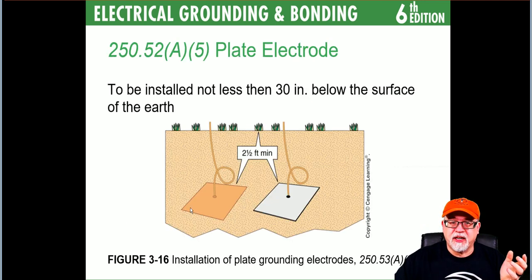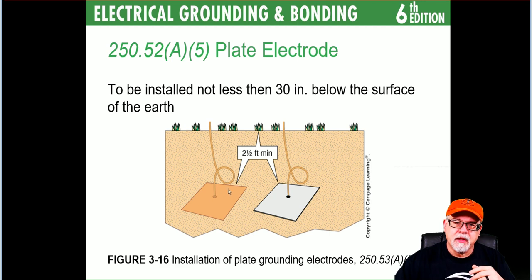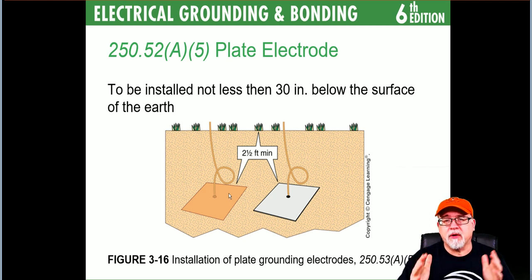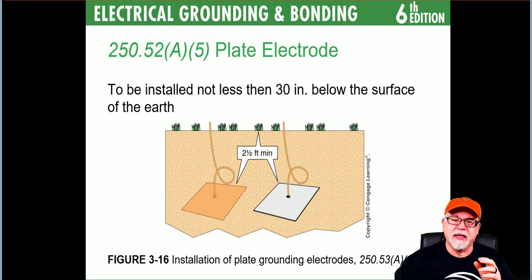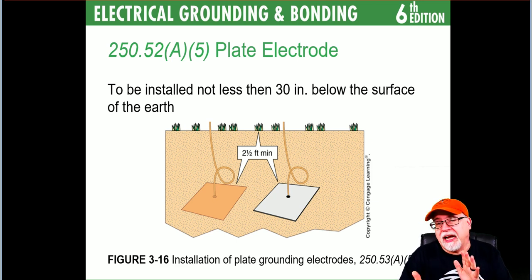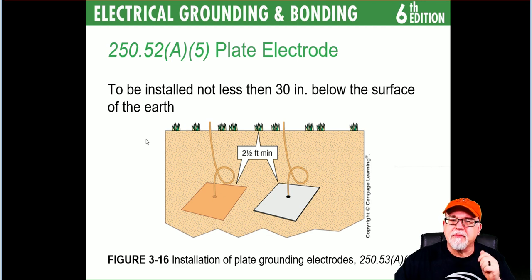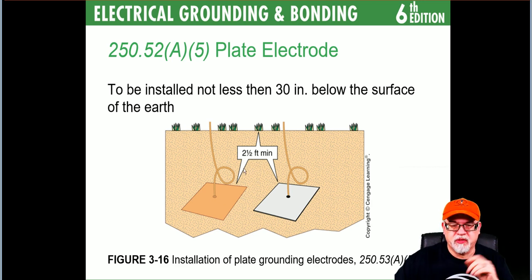Plates can't be less than 30 inches below the surface and must have two feet of surface area in contact with the earth. A one-foot by one-foot plate provides one square foot per side — using both sides gives two square feet of contact area. The code requires a minimum of two feet of surface area and a minimum burial depth of two and a half feet, which equals 30 inches.